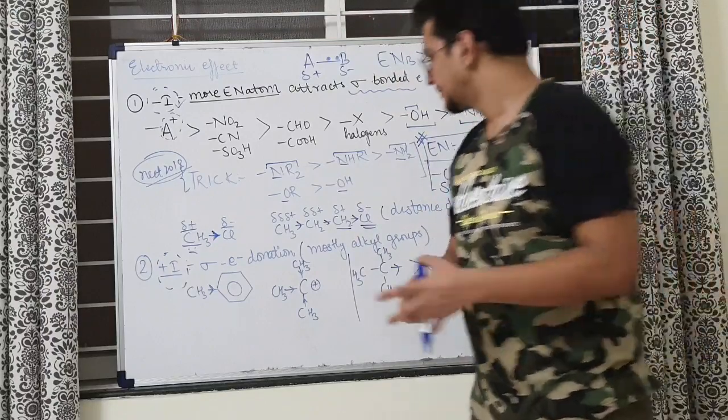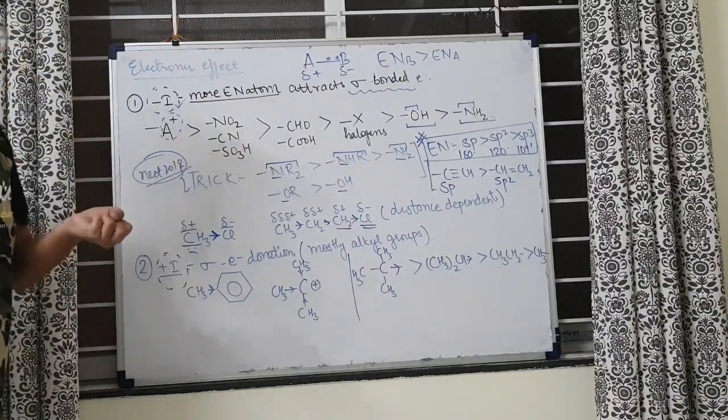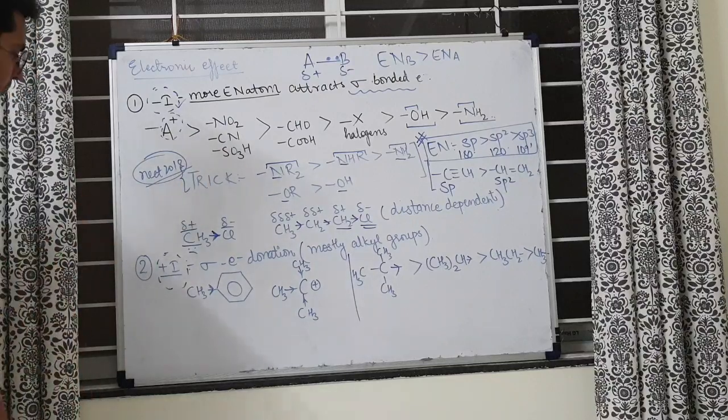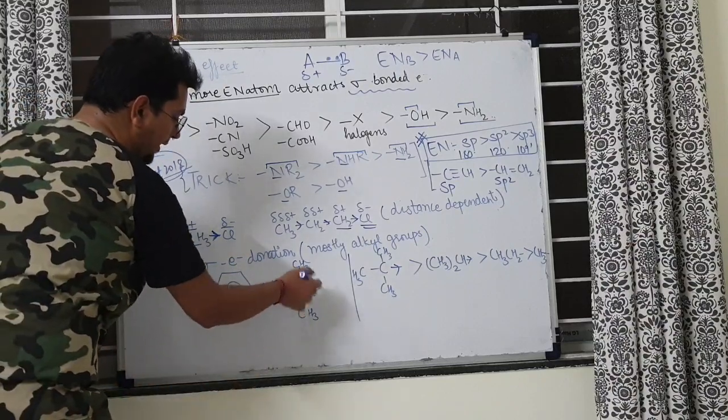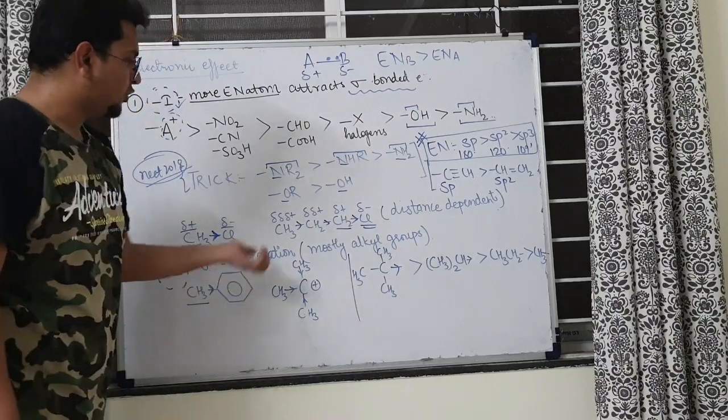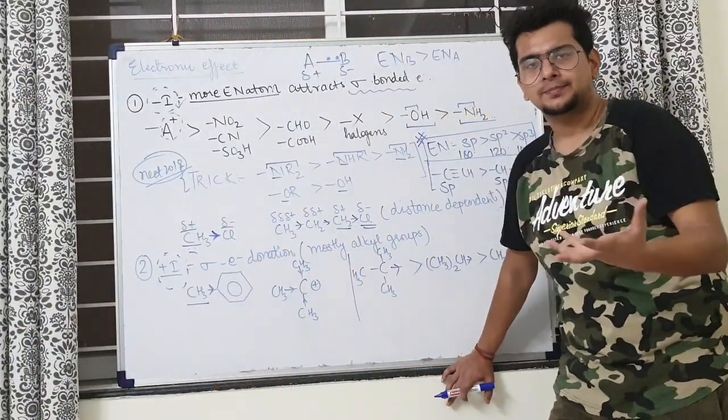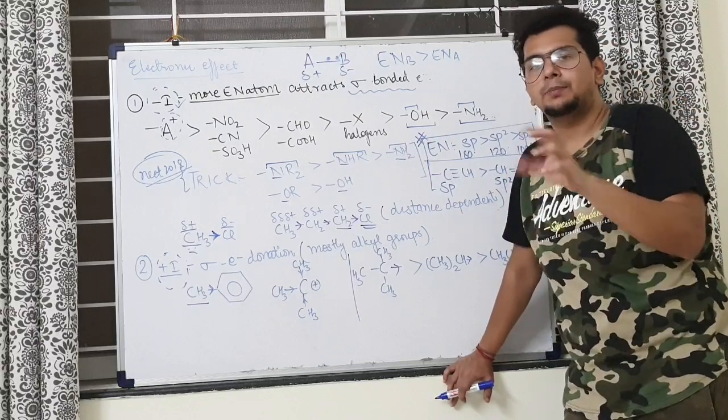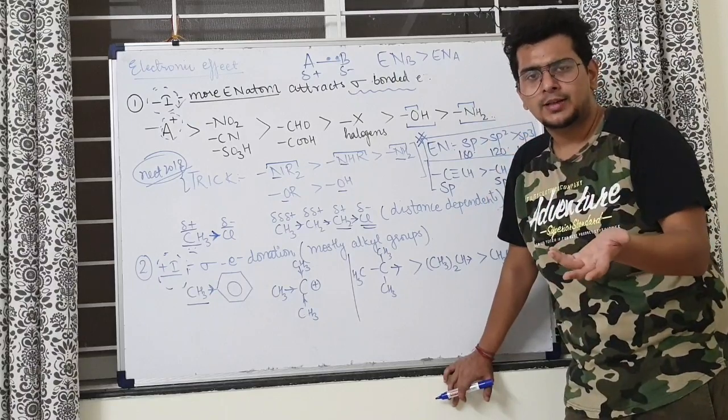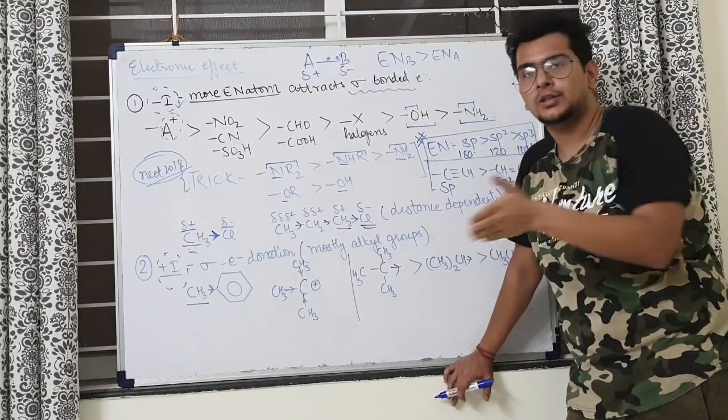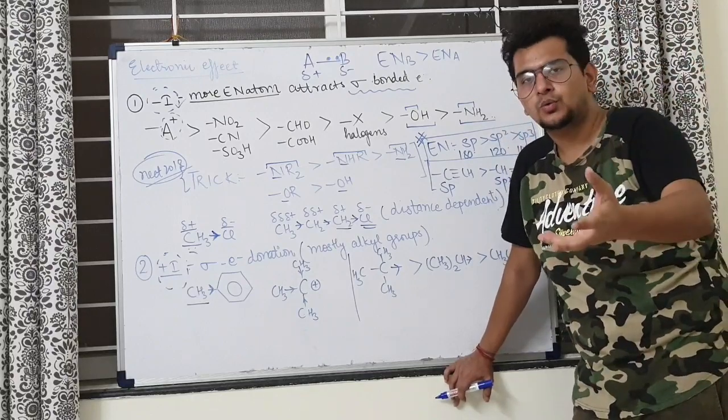Second, +I effect. -I was attraction of sigma bonded electrons, +I is donation of sigma bonded electrons. For example, methyl groups give electrons toward benzene. Mostly the +I effect is shown by alkyl groups. There are a few things you should just remember, just like in mathematics - you use a+b whole square = a² + b² + 2ab. You might not have known why initially, but you remembered the formula. Treat this order as a formula for organic chemistry.